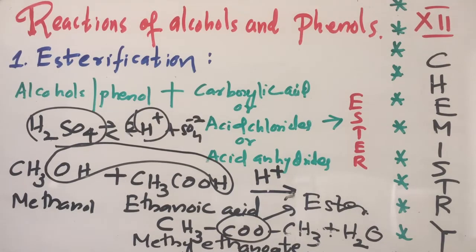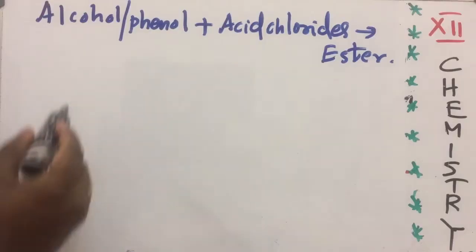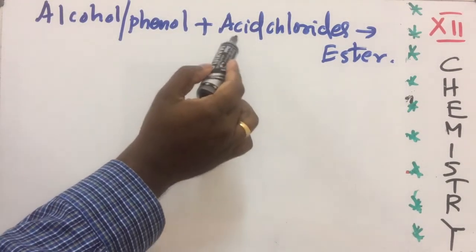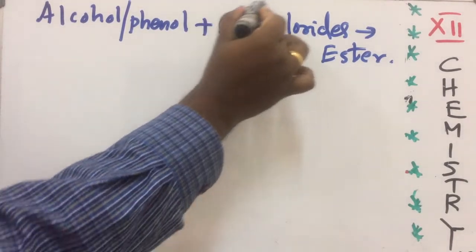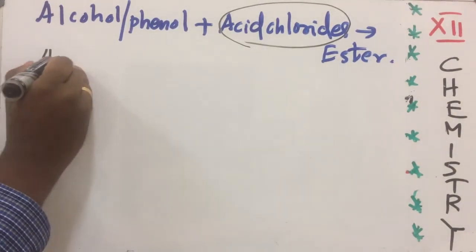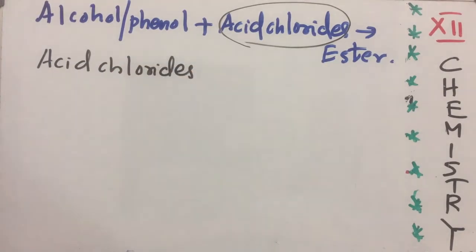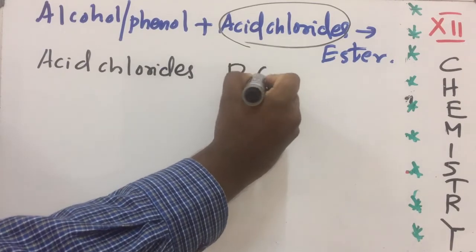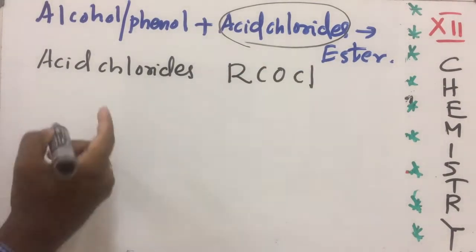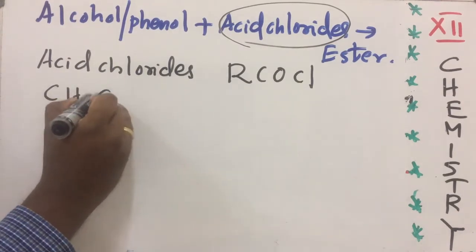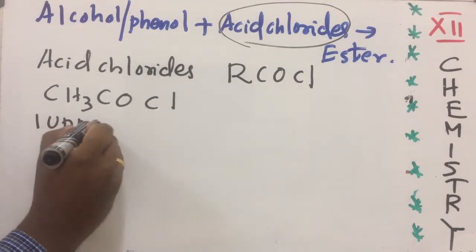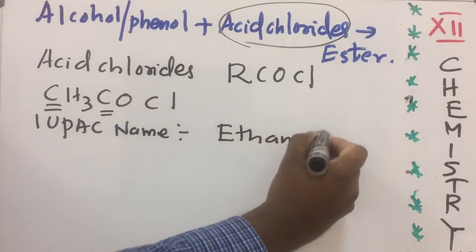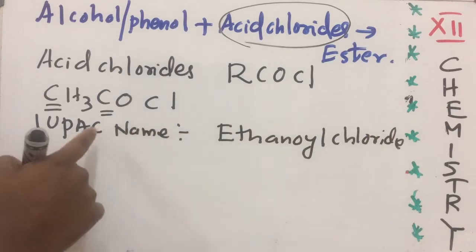Now let's see one example related to acid chloride. Alcohol or phenol react with acid chloride to form an ester — this reaction also belongs to esterification. Acid chlorides are considered halogen derivatives of carboxylic acid, with the general formula RCOCl. One example is CH3COCl. Its IUPAC name is ethanoyl chloride, as it has 2 carbons.